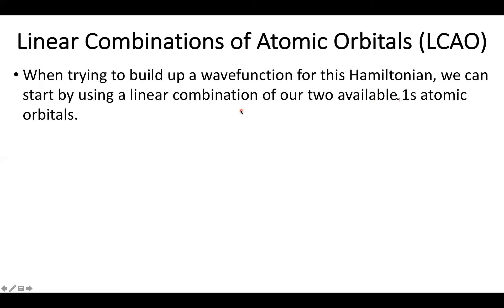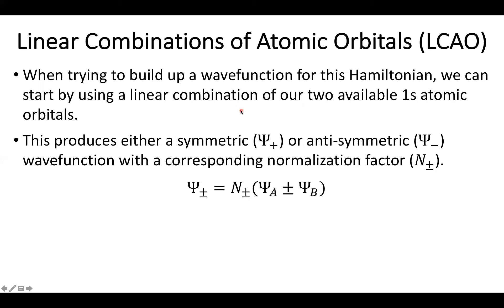So I've got two 1s orbitals. And as we've seen before, there's two ways I can put this together, either a symmetric or an anti-symmetric function. So we've seen this basic form before, but what we've been more or less ignoring until now is this normalization factor.